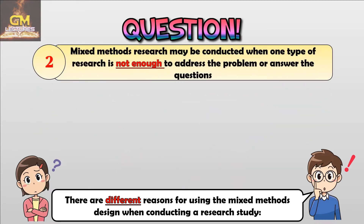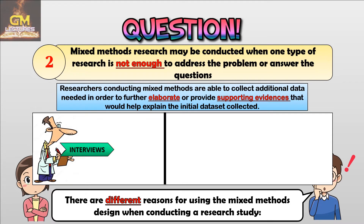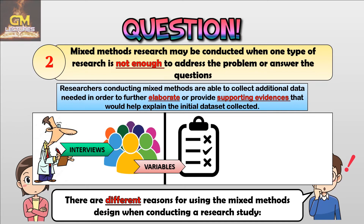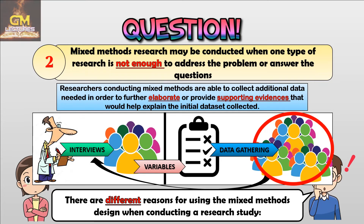Next, mixed methods research may be conducted when one type of research is not enough to address the problem or answer the questions. Researchers are able to collect additional data to further elaborate or provide supporting evidence that helps explain the initial data set collected. For example, a researcher who has conducted interviews with a selected group of individuals is able to identify themes, trends, and different variables. These variables are then used as a reference for designing a research instrument for data gathering from a bigger group. The results from the quantitative data are then used to verify or support the findings from the qualitative data collected earlier.